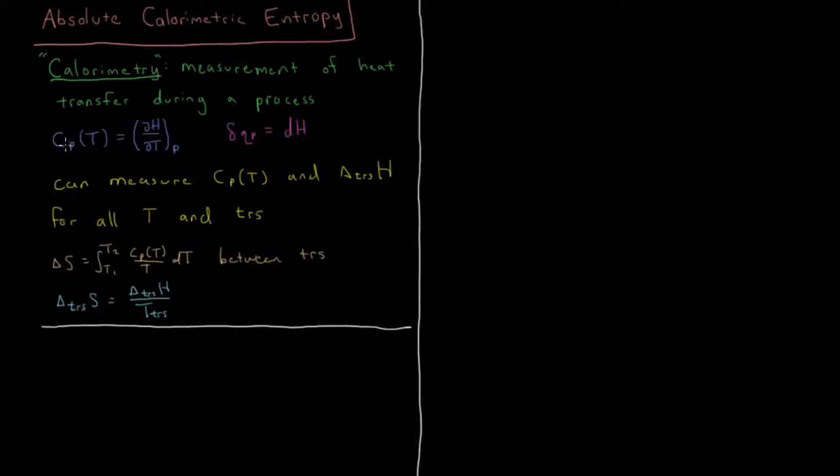Let's remind ourselves we have the constant pressure heat capacities, the partial derivative of enthalpy with respect to temperature at constant pressure. And when you have a constant pressure process, as most chemical processes are, then the heat which occurs during that process is equal to the enthalpy. So the differential of heat is equal to the differential of enthalpy. If we have some type of calorimeter, then we can measure the heat that's going into the system and the change in temperature, so we can get the constant pressure heat capacity for any given value of temperature.